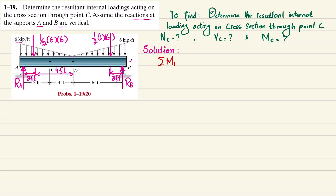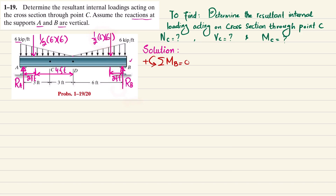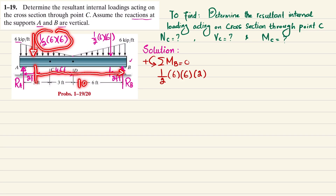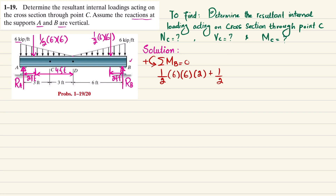The first equilibrium condition: sum of all moments about point B equals zero, taking counterclockwise as positive. The first moment is due to the left triangular load — one-half times 6 times 6 — and its perpendicular distance, producing a counterclockwise moment, so it is positive: (1/2)(6)(6) times its distance. The second moment is due to the right triangular load with perpendicular distance 4 plus 6 equals 10 feet, also counterclockwise: plus (1/2)(6)(6)(10).